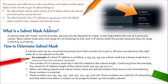The subnet mask indicates which portion of the IP address denotes the network and which portion denotes the host. A subnet mask will mask out the host bits, leaving only the network ID visible. It only helps to define the size of a particular subnet. Most subnet masks with a bit range of 0 to 8 belong to DSL and T1 IP blocks, while private networks have a bit range of 8 to 24 IP blocks. A subnet mask can be converted into binary form consisting of 0s and 1s — all 0s are placed on the right while 1s are placed on the left side.